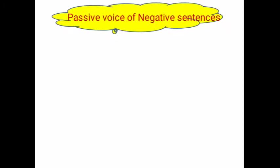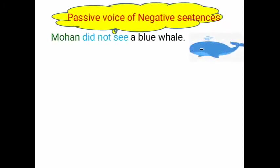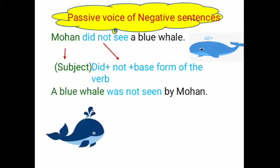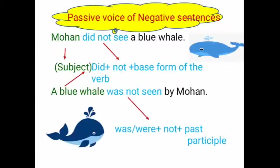Passive voice of negative sentences: 'Mohan did not see a blue whale'. Here the subject is Mohan, 'did not' with the base form of the verb. In passive voice this becomes: 'A blue whale was not seen by Mohan'. The blue whale is now the subject, followed by 'was/were + not + past participle of the verb'.